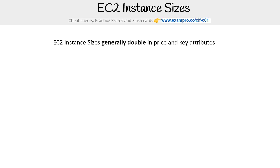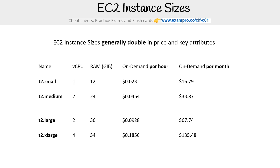The EC2 instance sizes generally double in price and attribute. Starting at the small here, you'll notice one, two — it doesn't quite double there — but four, and here we see 12, 24, which almost doubles. The price is generally almost double: 16, 33, 67, 135.